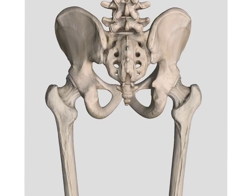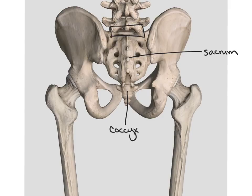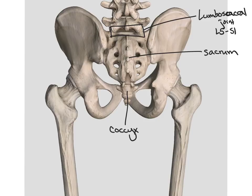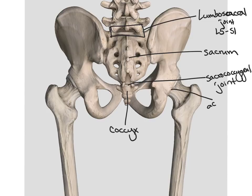Looking at the posterior side, we again have our right and left ilium as well as our femur, sacrum, and coccyx. The joint formed between our lumbar spine and sacrum is called the lumbosacral joint, which is the articulation between L5 and S1. At the bottom of our sacrum, between the sacrum and coccyx, we have our sacrococcygeal joint. Our main hip joint is the acetabulofemoral joint.